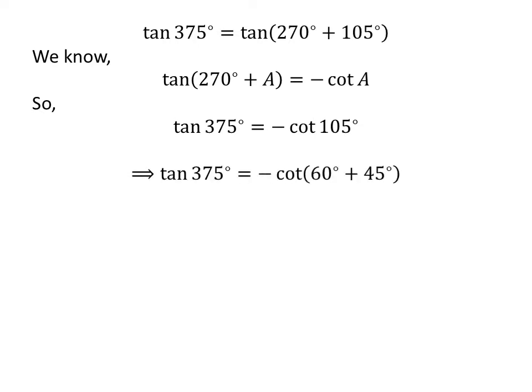Again, 105 degrees is equal to 60 degrees plus 45 degrees, so tangent of 375 degrees is equal to minus cotangent of 60 degrees plus 45 degrees.